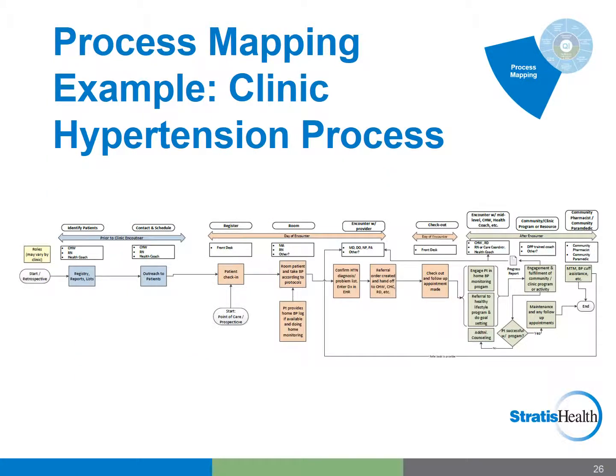Here is a more developed process map for identification and treatment of hypertension within a clinic. It was converted to an electronic format using Microsoft Visio. The blue boxes or steps represent work done before the patient visits the clinic. Orange boxes are during the encounter and green are post-visit. The white boxes directly above the colored ones indicate roles that carry out the tasks. The takeaway here is to show you how you can start with a sticky note process map, clean it up, and then add features that are helpful for your team's discussion and possible presentation outside your QI team.